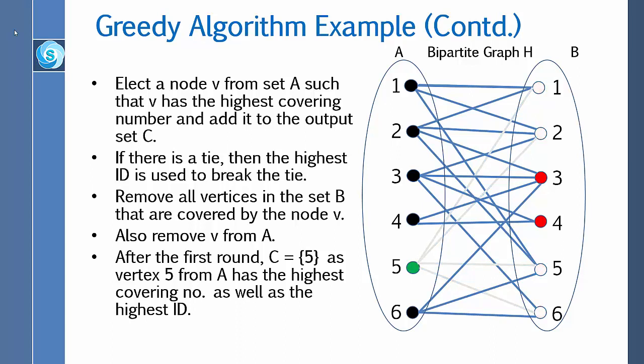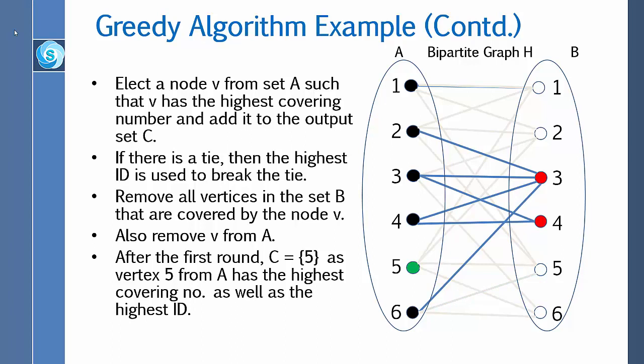The greedy algorithm works as follows: elect a node V from set A such that V has the highest covering number, and add it to the output set C. If there is a tie, the highest ID is used to break the tie. Remove all vertices in set B that are covered by node V, and also remove V from A. In this example, after the first round, the output set C equals {5}, as vertex 5 from A has the highest covering number as well as the highest ID. When you elect vertex 5, you remove all edges connected to it and all vertices in B connected to vertex 5.